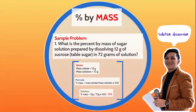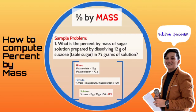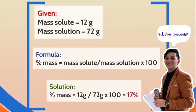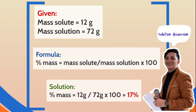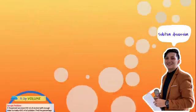We have percent by mass. To get percent by mass, all you have to do is use this formula: percent by mass equals mass of solute divided by mass of solution, times 100. Sample problem number one: What is the percent by mass of a sugar solution prepared by dissolving 12 grams of sucrose in 72 grams of solution? Given: mass of solute = 12 g, mass of solution = 72 g. Substituting: 12 divided by 72, times 100, equals 17 percent.